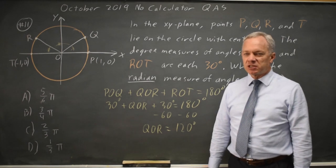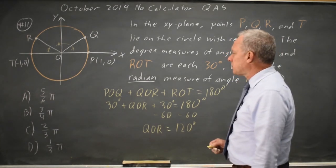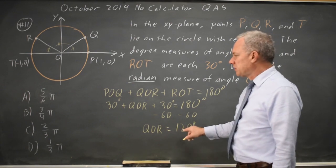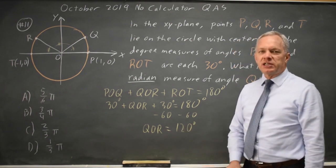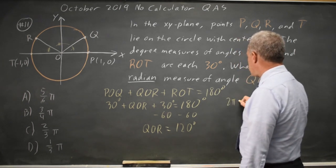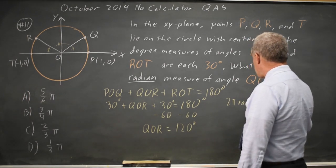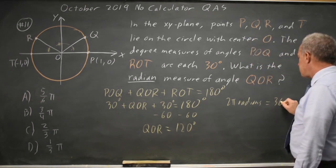and they're being nice and not putting in a distractor. It is mathematically correct but not the answer to their question. I need to convert this from degrees to radians and I know that 2 pi radians equals 360 degrees.